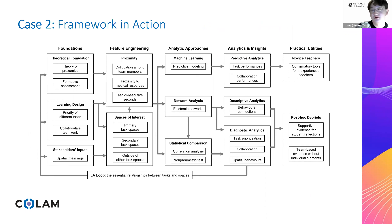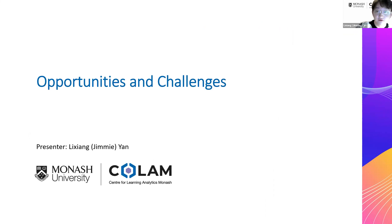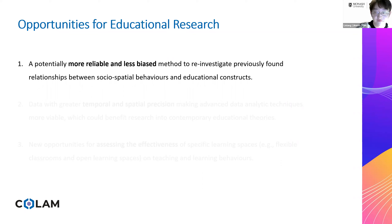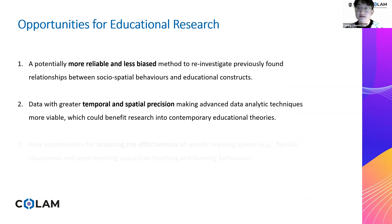I only covered a portion of this framework, and there are more practical utilities of social spatial analytics. One opportunity is providing a potentially more reliable and less biased method to reinvestigate previously found relationships between social spatial behavior and educational constructs, such as the impacts of instructional proxemics on teaching and learning. Prior observation studies were mostly based on small samples and often lacked reliability evaluations, making findings vulnerable to the replication crisis.